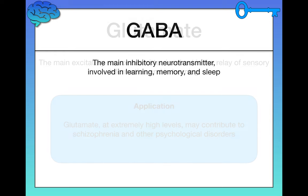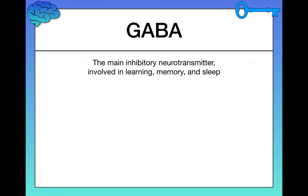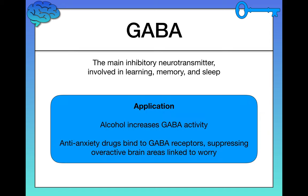Next, we have GABA, which is the main inhibitory neurotransmitter. GABA is involved in learning, memory, and sleep — very important functions. In terms of applications, alcohol increases GABA activity, and anti-anxiety drugs bind to GABA receptors, suppressing overactive brain areas linked to worry. We can take advantage of neurotransmitters by developing drugs that affect them in different ways to produce the results we want.